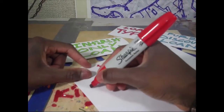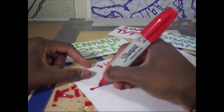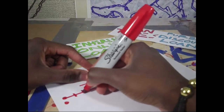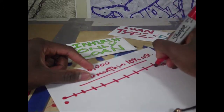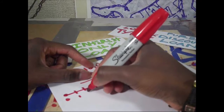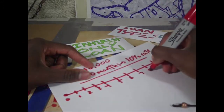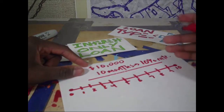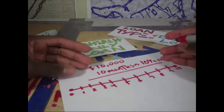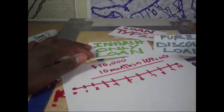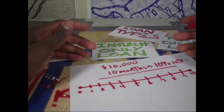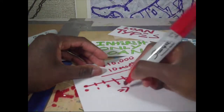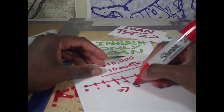Let's draw this out. We'll make a timeline from zero all the way to ten months. At the end of this ten-month time span, the return for whoever is lending the money is going to be ten percent — so a thousand dollars. Interest in total will be a thousand dollars, but let's see how it's collected.